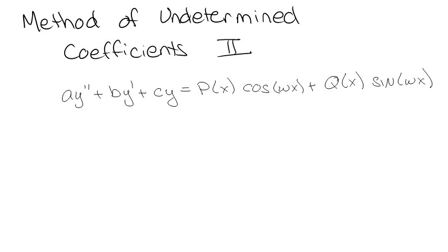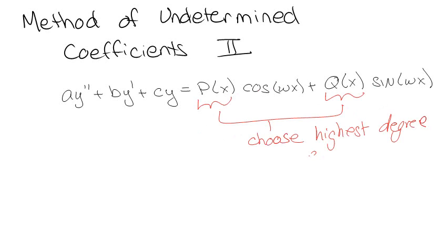The idea is the same. You're going to solve a homogeneous problem, then make a guess for the particular. Now your guess is going to be altered by a couple of things. You've got some polynomial here and some polynomial here. You're going to choose the highest degree of these two in order to make your guess, and you use that for both.